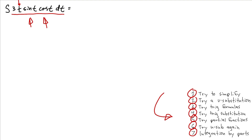Integration by parts is really nice, especially because, as I pointed out, you have a bunch of things being multiplied by each other. The formula begins kind of like a u-substitution — you look at one thing that's easy to take the derivative of and one thing that's easy to take the integral of. If they're being multiplied together, it surely is an integration by parts. What is the easiest thing to take the derivative of? We can use t, we can use sine of t. Taking the derivative of cosine of t gives us a negative, and I don't want to work with negatives.